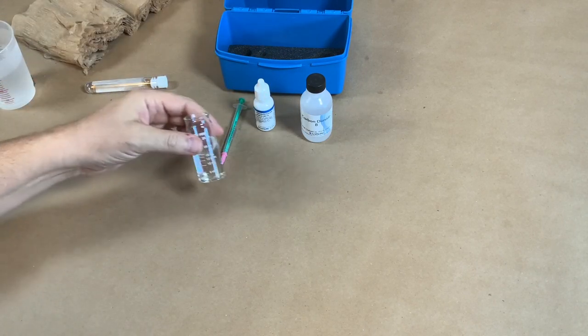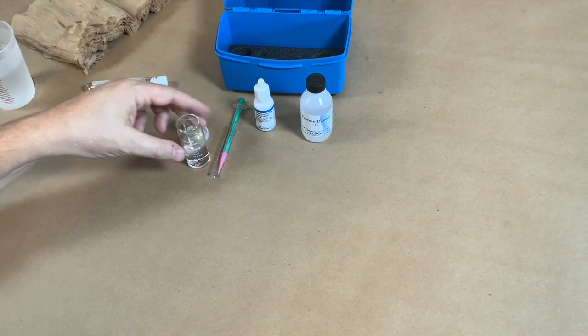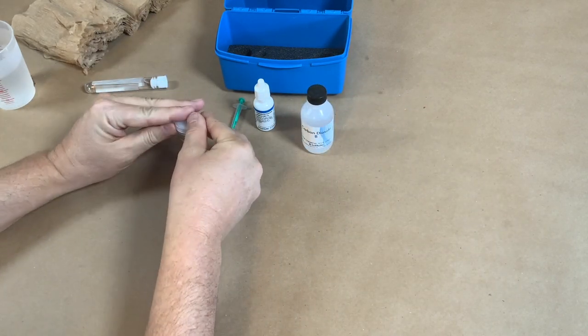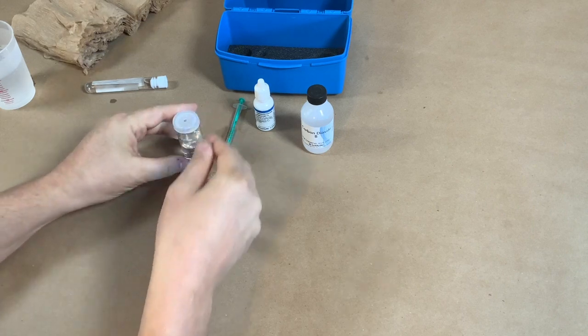The next thing we're going to do is put the cap on here. So there we go, our plastic cap is on there, but it has a little hole in it. And then with this reagent, the carbon dioxide B reagent, I'm going to open that up.